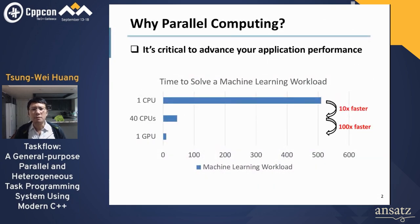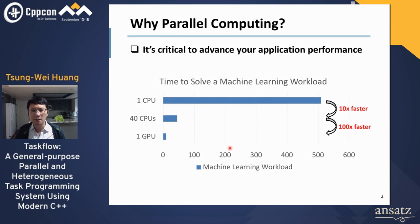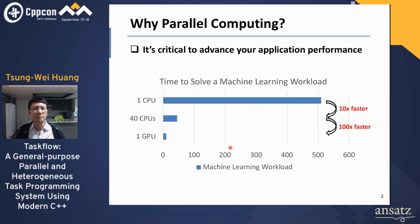You probably already know parallel computing is critical to advance your application performance. For example, a single-threaded machine learning program can take several hours to finish, but it can be reduced to only a few minutes or even a few seconds if we are able to run it in parallel. That's the power of parallel computing — by leveraging many-core processing units, we are able to speed up performance by several orders of magnitude.